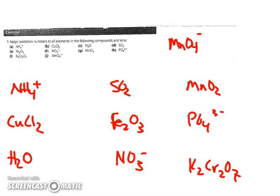Welcome to the screencast for the topic nine exercises. Starting with number one, you're supposed to assign oxidation numbers to the elements.